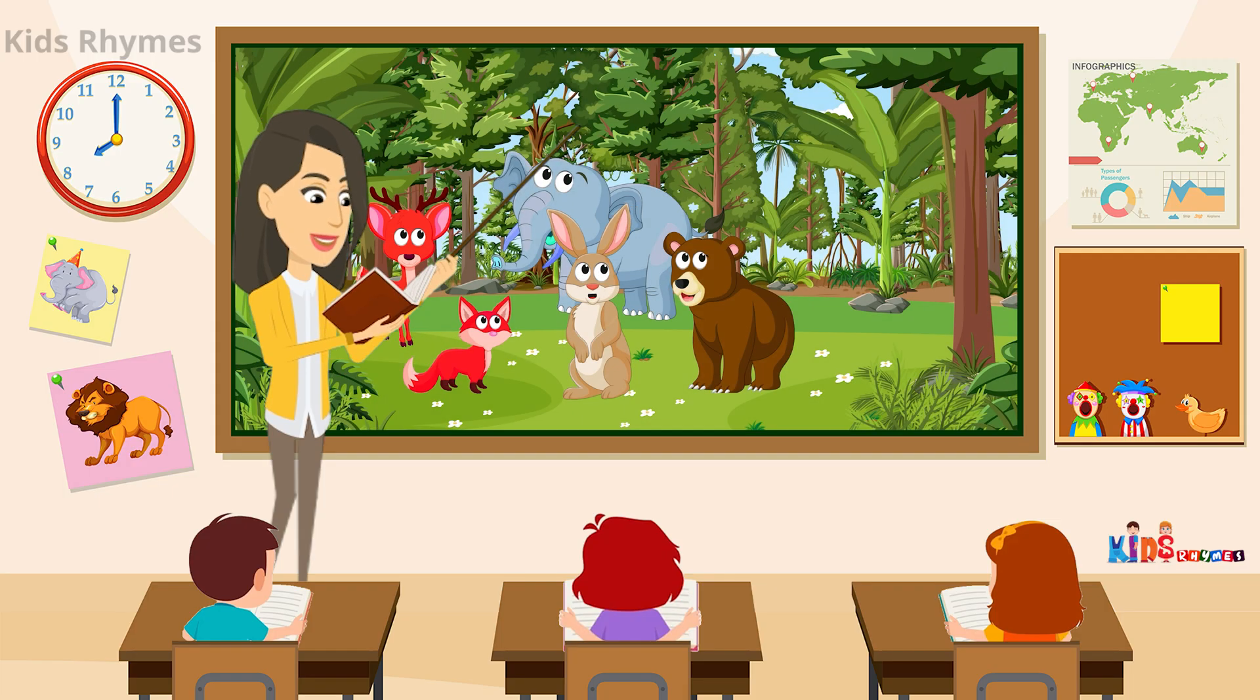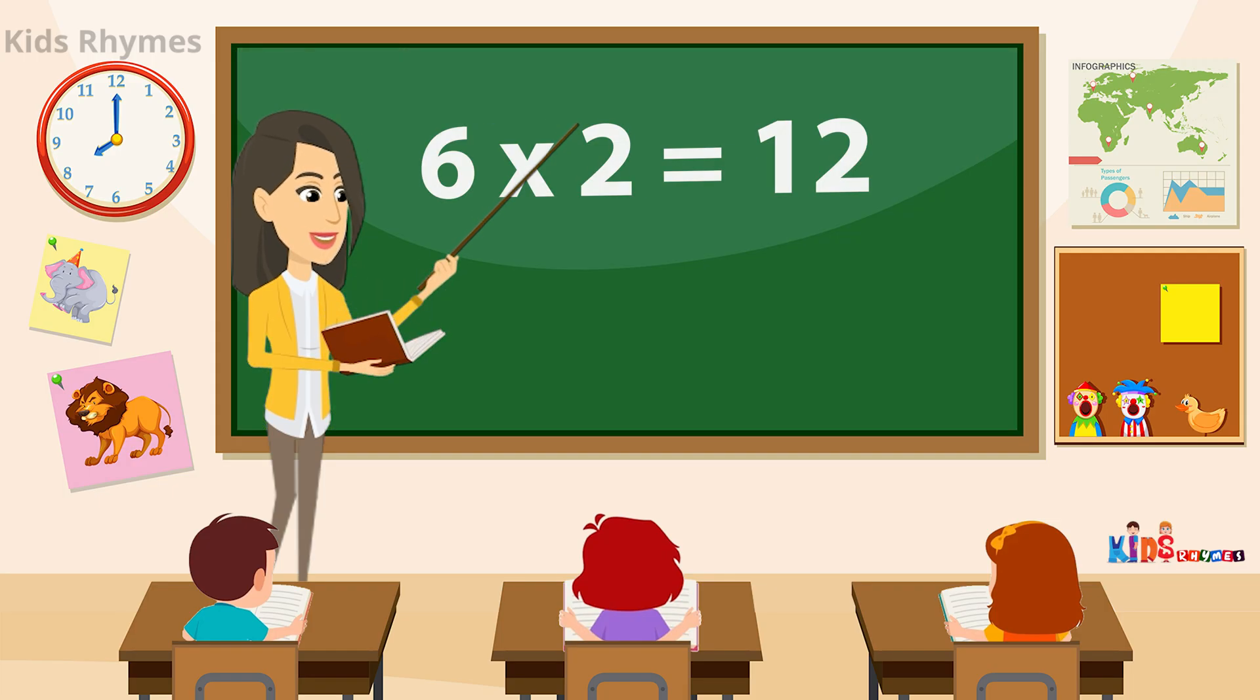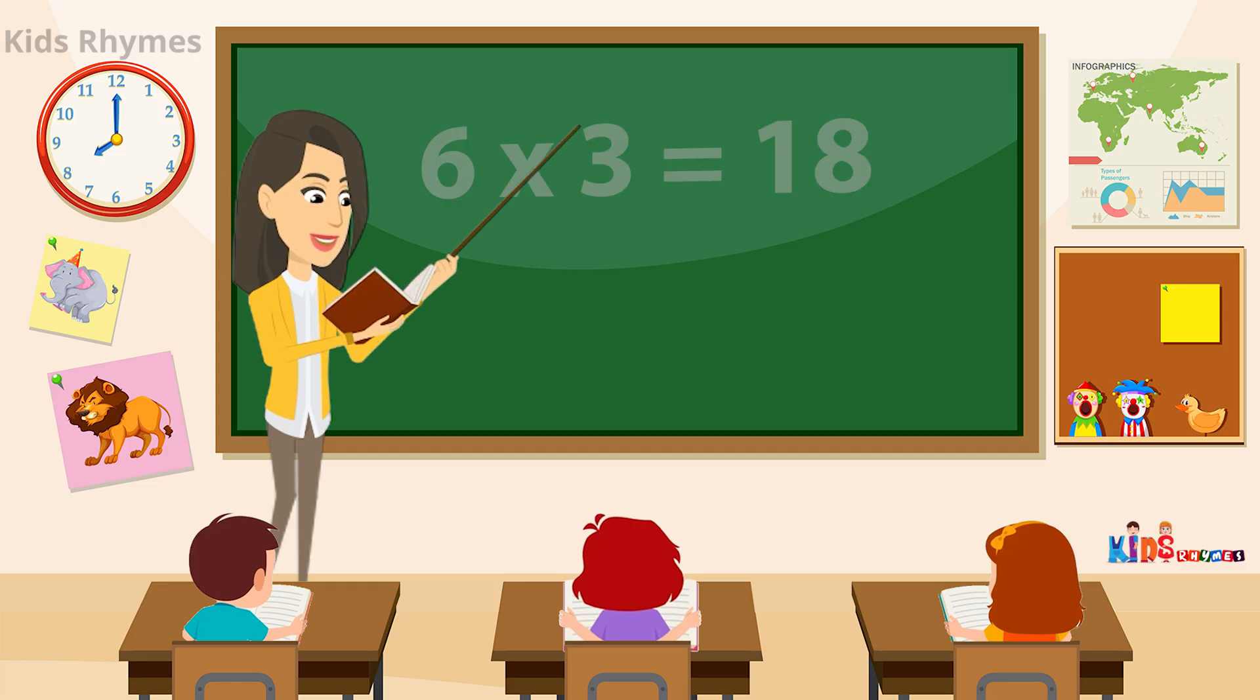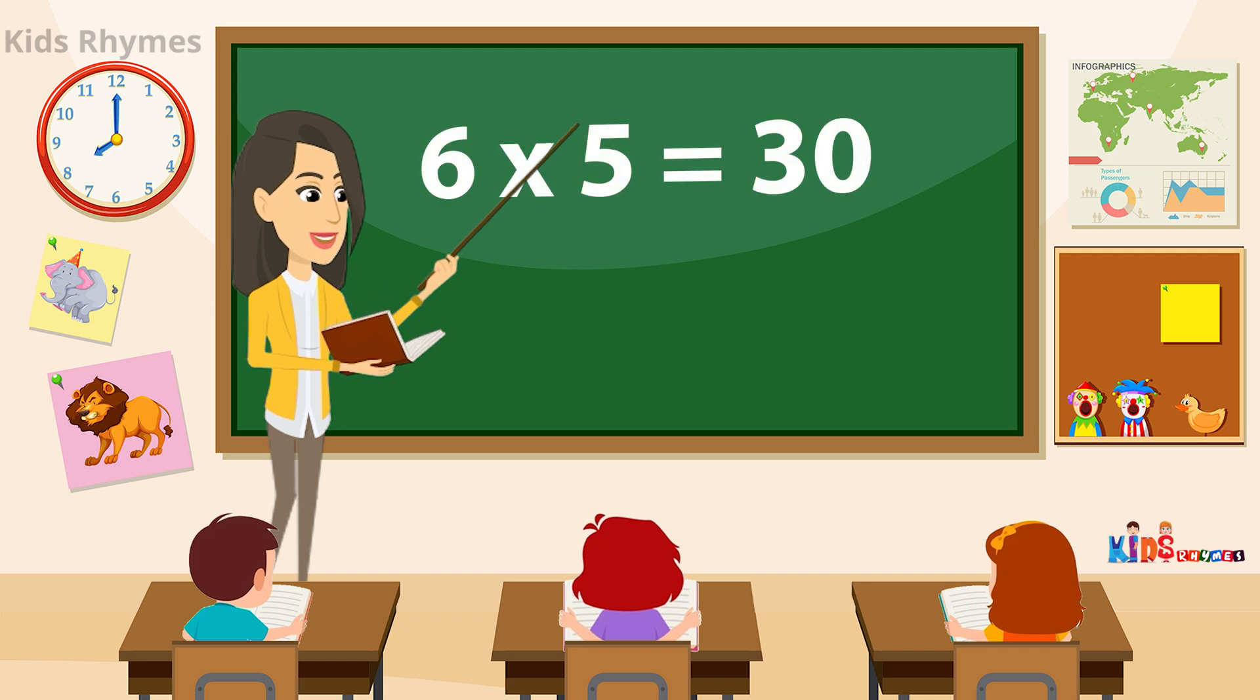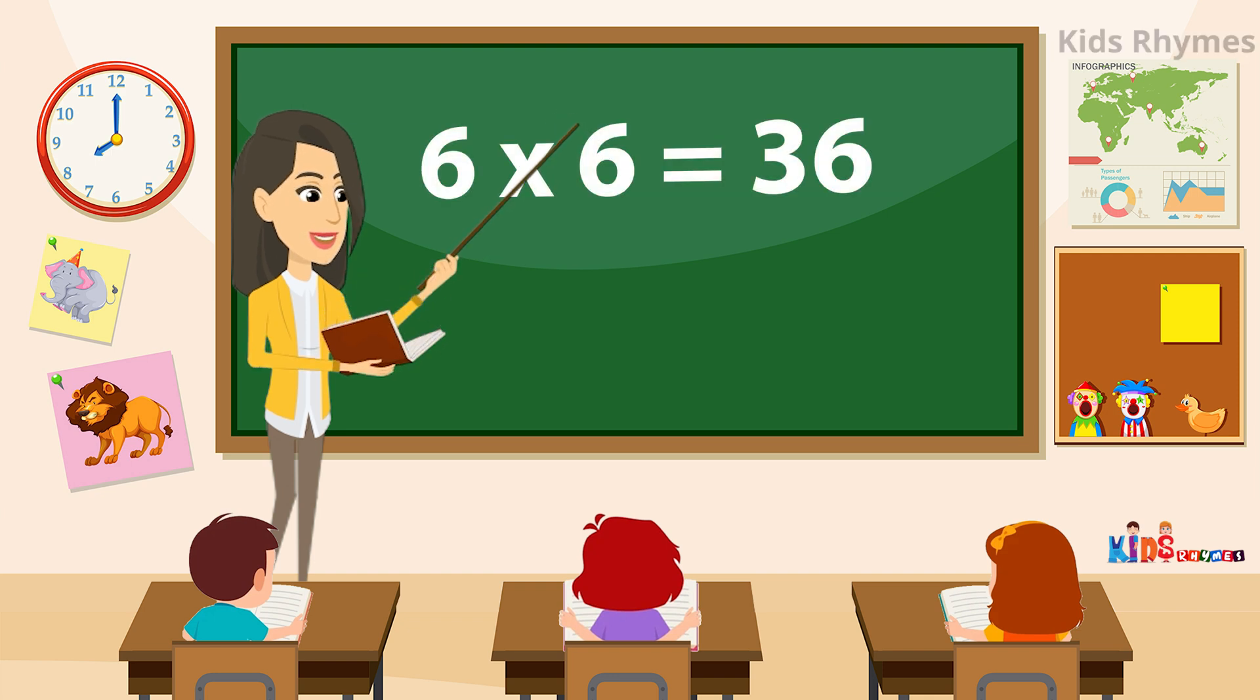So kids, let's repeat with me. Six ones are six. Six twos are twelve. Six threes are eighteen. Six fours are twenty-four. Six fives are thirty. Six sixes are thirty-six.